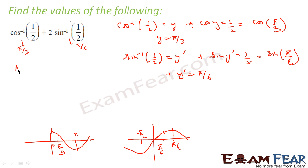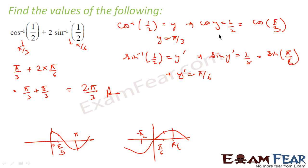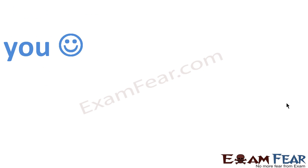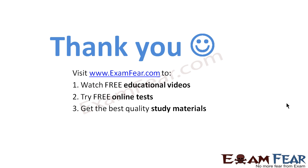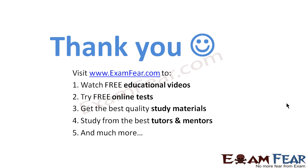So our question becomes: cos inverse(1/2) is π/3, plus 2 times sin inverse(1/2) which is π/6. This gives π/3 plus π/3, which equals 2π/3. And that is my answer. Very simple. The key difficulty is writing the value in the form of cos or sin, making sure the angle chosen is in the principal interval. If it is in the principal interval, we are good; otherwise we must change the values. Thank you. Visit examfear.com to watch free educational videos, try free online tests, get the best quality study materials, and study from the best tutors and mentors.